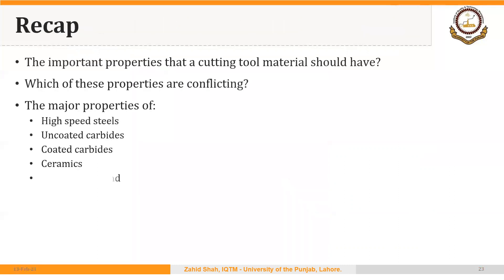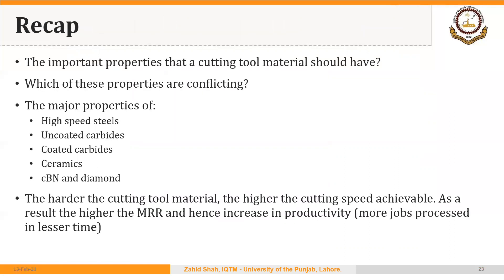As an overall summary, we discussed cutting tool materials and their properties: HSS, uncoated carbides, coated carbides, ceramics, CBN, and diamond. The main takeaway is that the harder the cutting tool material, the higher the cutting speed achievable. As a result, the higher the material removal rate and the greater the productivity — more jobs can be processed in less time.